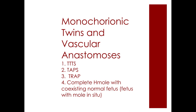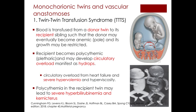In monochorionic twins and vascular anastomosis, twin-twin transfusion syndrome (TTTS) occurs when blood is transfused from a donor twin to its recipient sibling. The donor may become anemic, pale, and growth-restricted, while the recipient twin becomes polycythemic or plethoric and may develop circulatory overload manifesting as hydrops. Circulatory overload from heart failure and severe hypervolemia and hyperviscosity may develop, and polycythemia in the recipient twin may lead to severe hyperbilirubinemia and kernicterus.